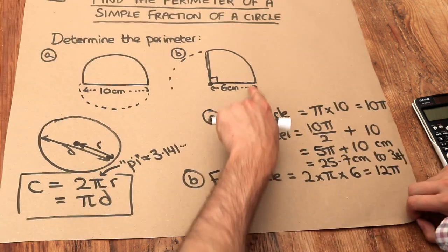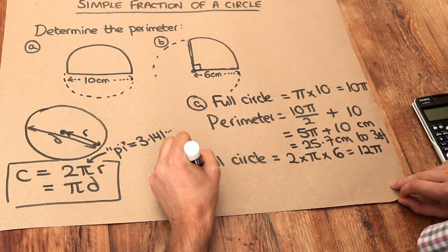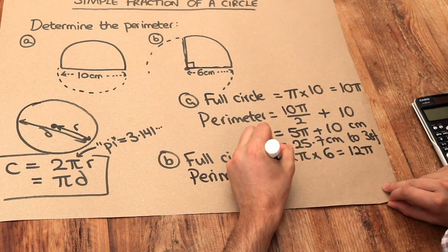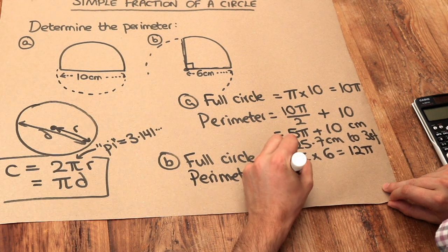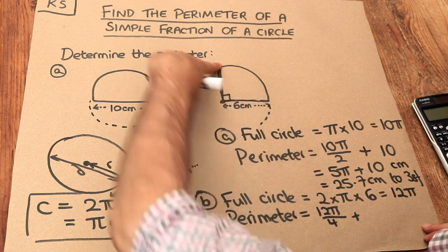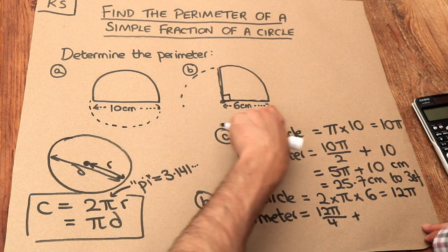But we want just a quarter of that circle. So our perimeter is going to be that divided by 4, a quarter of it. But we want to add on the other lengths as part of our perimeter. So we've got this length. We've also got this length and this length.